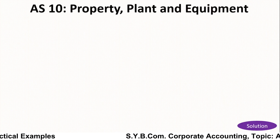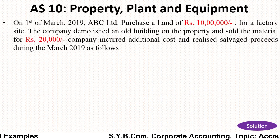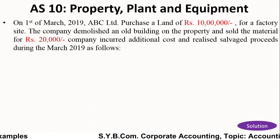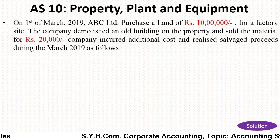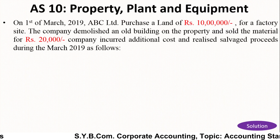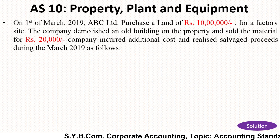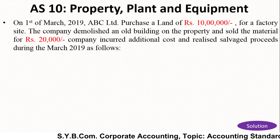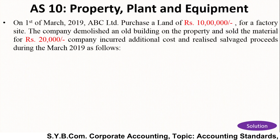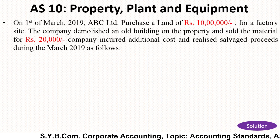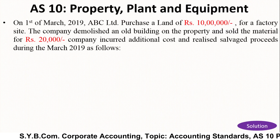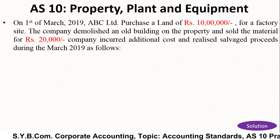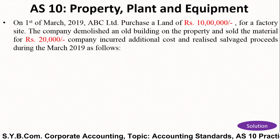Here you can see the example of AS10, that is Property, Plant and Equipment, where we are going to see the example of cost. On 1st March 2019, ABC Limited purchased land of Rs. 10 lakh for a factory site. The company demolished an old building on the property and sold the material for Rs. 20,000. The company incurred additional costs and realized salvage proceeds during March 2019 as follows.